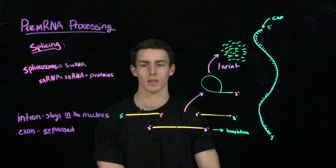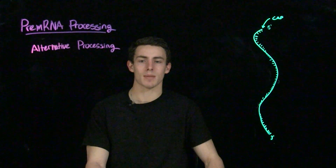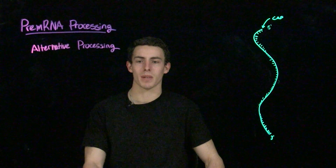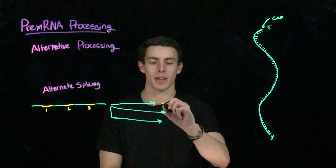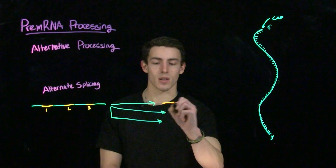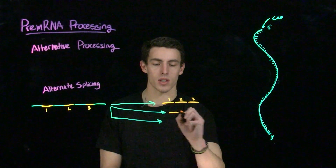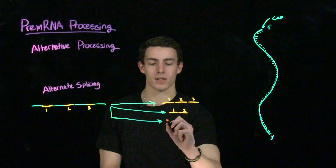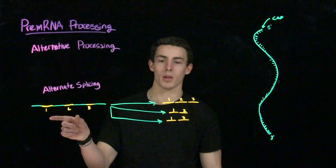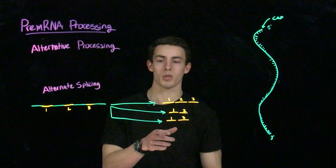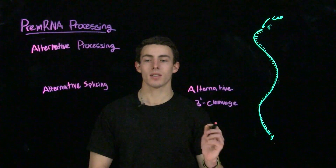It's worth mentioning that there are several other ways we can go about processing. In the realm of alternative processing, we discuss two specific types in this course. The first is alternative splicing. With alternative splicing, we can have multiple different combinations of how we actually put together exons after they're spliced. So we could have the expected exons 1, 2, and 3 come together, or just exons 1 and 2, or exons 1 and 3, and so on. From one single molecule of mRNA, we could get multiple different gene products. This is useful because it allows more adaptability with fewer genes.